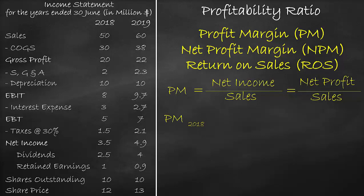Let's say we have net income equal to $3.5 million. We divide this by the sales of $50 million, and this gives us 7%.